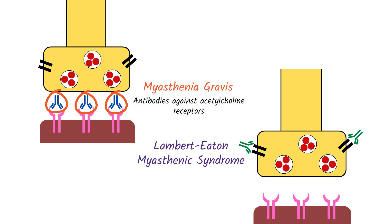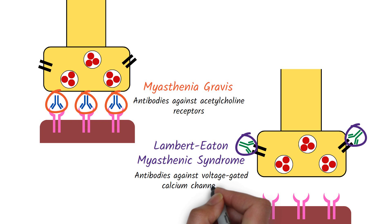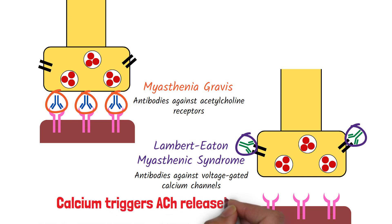The antibodies produced in Lambert-Eaton Myasthenic Syndrome work a bit differently. They bind to the pre-synaptic voltage-gated calcium channels and prevent the release of acetylcholine, because calcium triggers acetylcholine release.